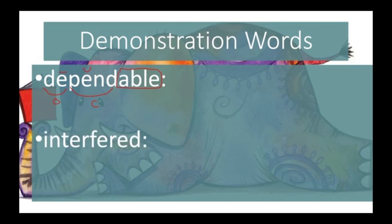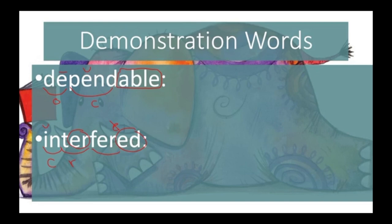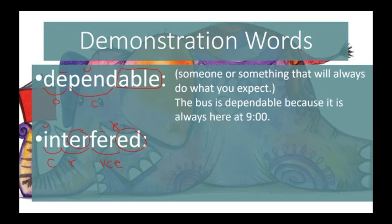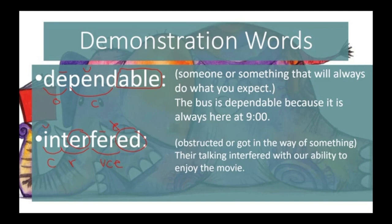For the next demonstration word, interfered — remember, there's a silent E that's been cut off from interfere. I'm going to mark in as a closed syllable; ter has the R-controlled sound; and fear — that long E sound is a VCE sound. We have the suffix -ED on the end. Dependable means someone or something that will always do what you expect: the bus is dependable because it is always here at nine o'clock. Interfered means that something got obstructed or got in the way: their talking interfered with our ability to enjoy the movie.